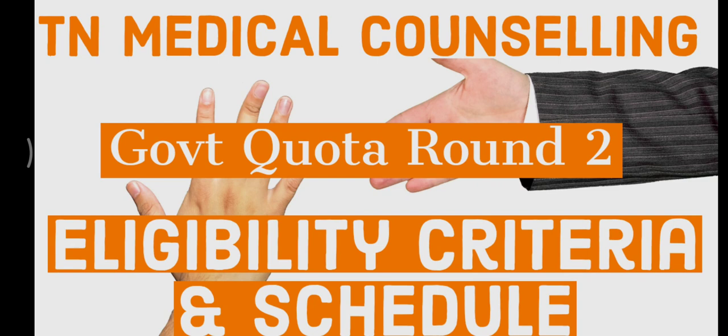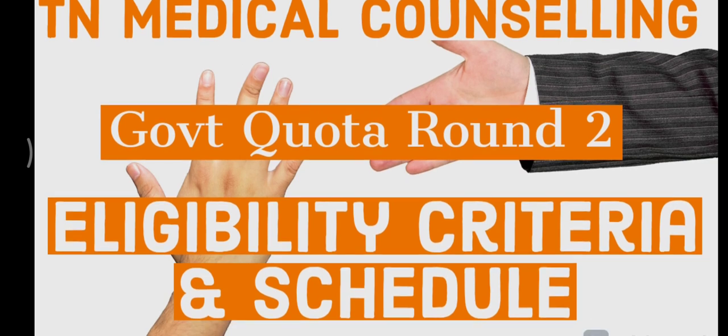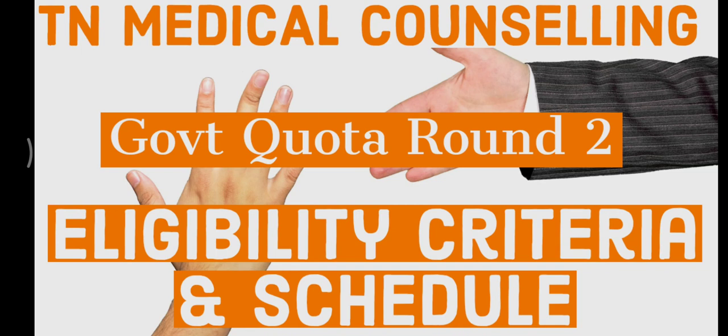In this video, you will be eligible for round 2. How do you start round 2? Let's discuss it. In round 1, you will participate in the waiting list. In the government, you will participate in the waiting list. In round 1, you will participate in the seat. We will join in round 2. If you call for the council, you will participate in round 2. This is the eligible criteria.